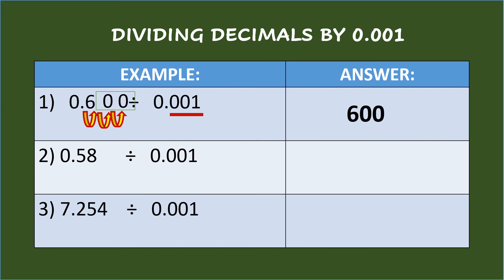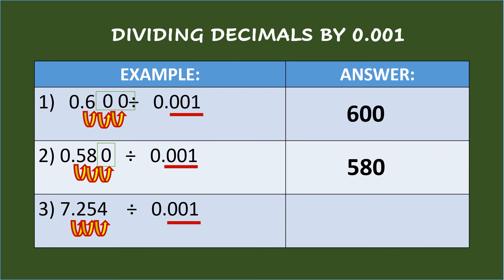Second example: fifty-eight hundredths divided by one-thousandth. Third example: seven and two hundred fifty-four thousandths divided by one-thousandth. There are three decimal places in the divisor, so move the decimal point of the dividend three places to the right and put the decimal point afterwards. So the answer is seven thousand two hundred fifty-four.